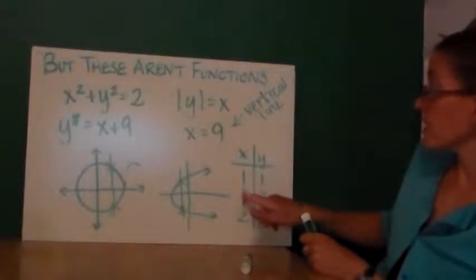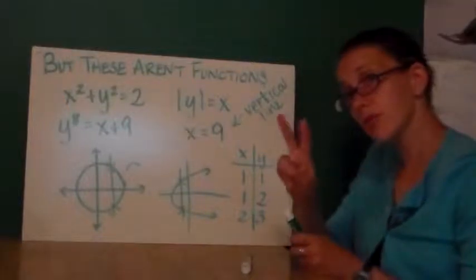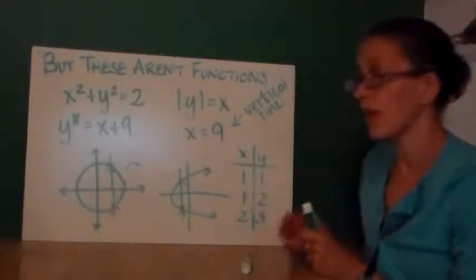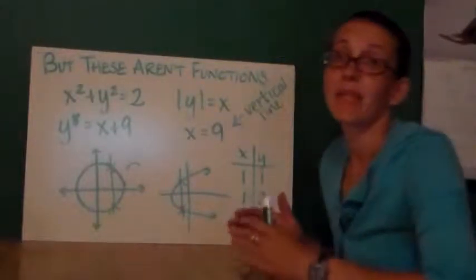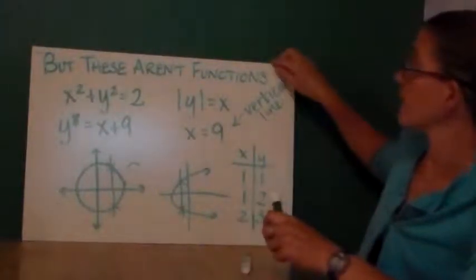And again, a tabular representation. Notice that the number one appears two times under the x column. It is matched with two different y values. That means that this is not a function.